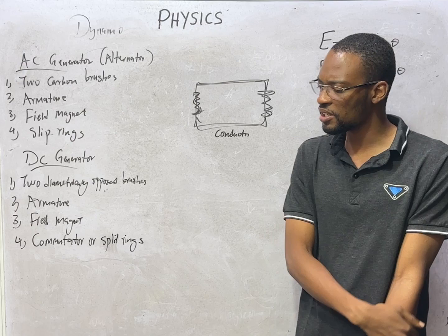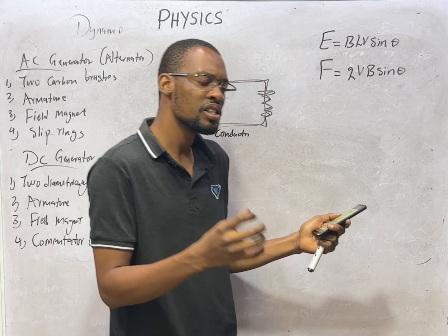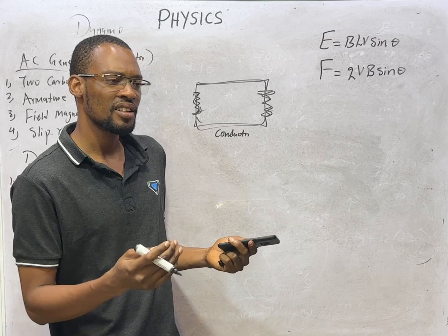Talking about efficiency of transformers and efficiency of machines, you notice the reason why efficiency of machines is not 100% is because of friction. Machines are made up of moving parts. They contain moving parts. So when there is friction in these moving parts, of course, the machine will not be 100% efficient.